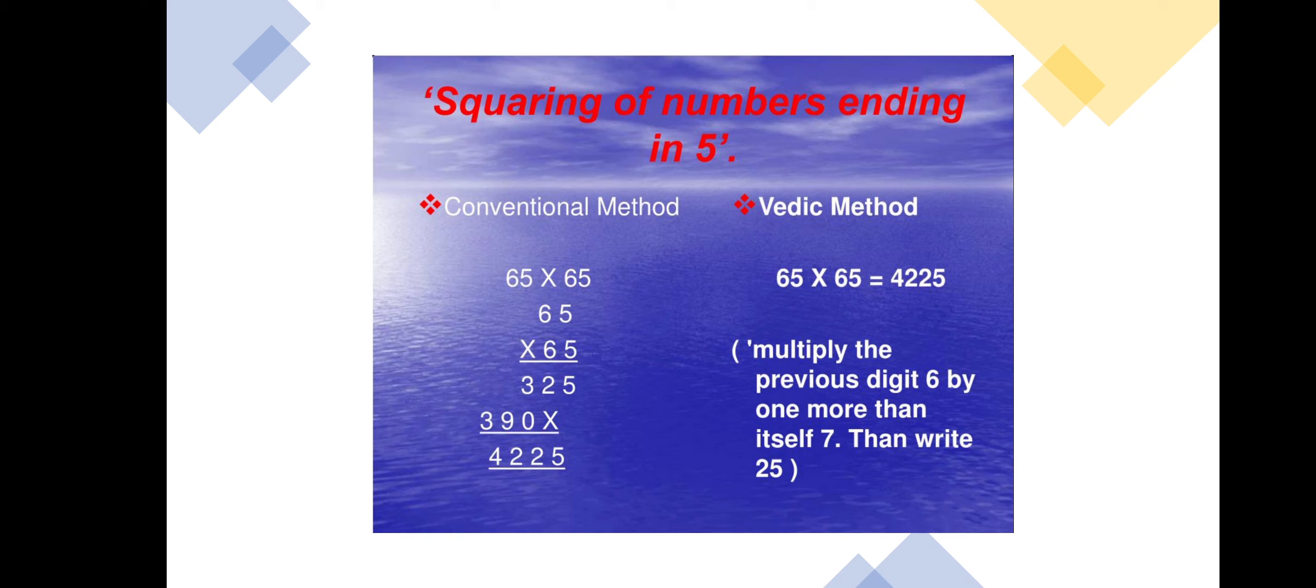As per the Vedic method, how we multiply the numbers ending with 5. Here, multiply the previous digit 6 in this number 65 by one more than itself, that is 7. If you multiply 6 by 7, you get the answer 42.